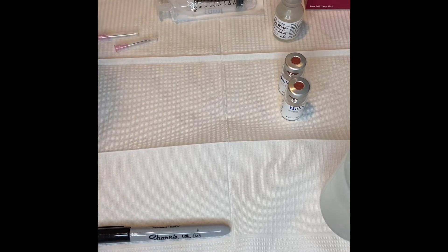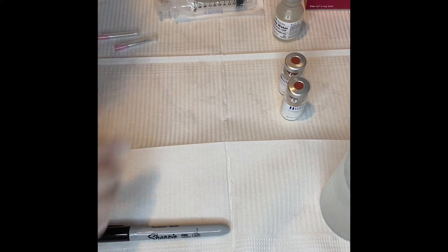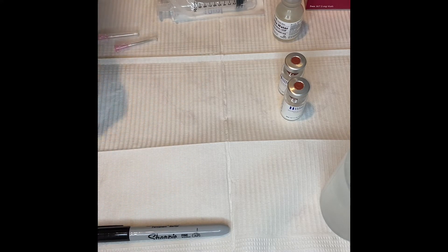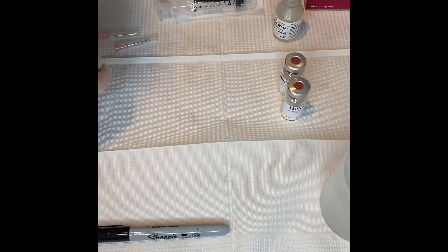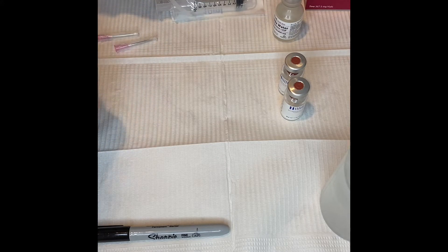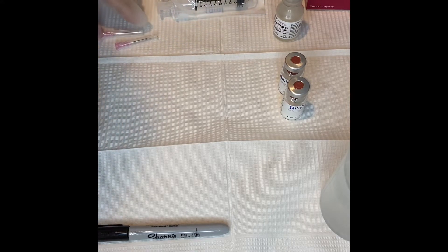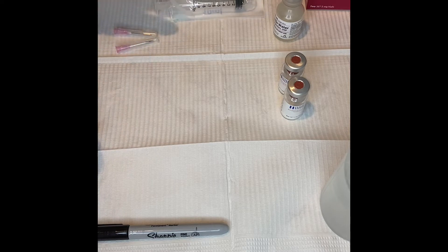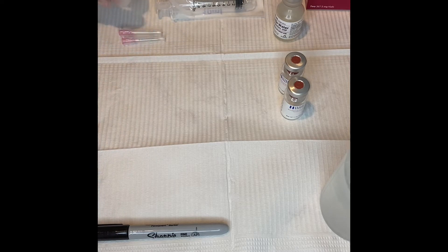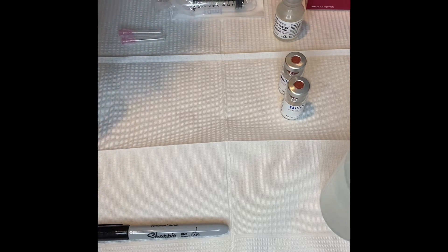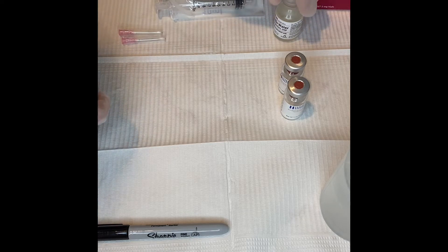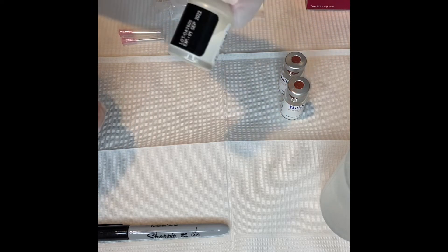Okay, so this is a video on how we pre-mix Sculptra. I've already set everything up here. You're going to need your Sculptra vials - it comes in a pack of two, two 10cc syringes, anywhere between an 18 to a 23 gauge needle is fine. I have an 18 gauge one inch, a vial of sterile water - I have a 20ml bottle here.